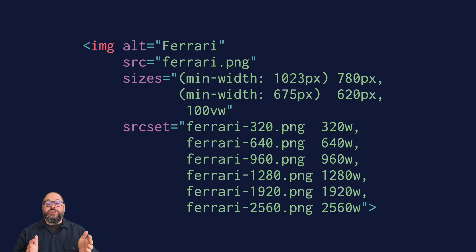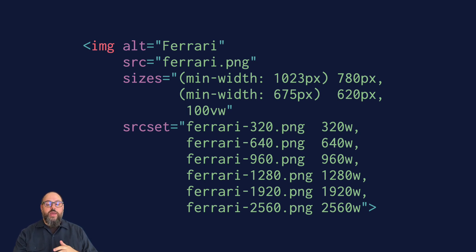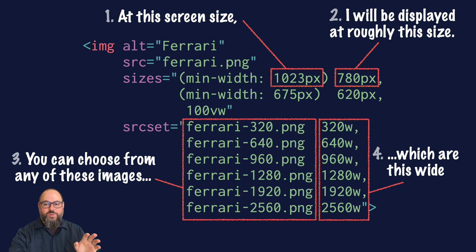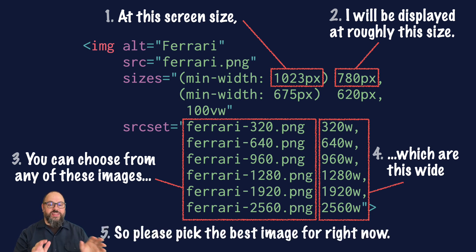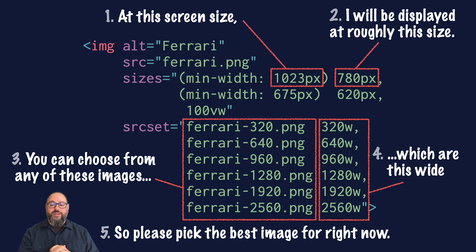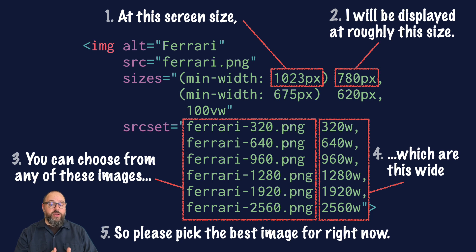As you can see, the combination of the srcset and sizes attributes gives you a lot of bang for your buck. By adding just two attributes, you tell the browser: at this screen size, the image will be this wide — please choose the best option from this list of images. There's a lot more power available for more complicated things, such as serving modern image formats like WebP or serving different images at different screen sizes. If you need details on those use cases, I strongly recommend Jason Grigsby's Responsive Images 101 series on Cloud4.com. Thanks for listening — I'll catch you next time.